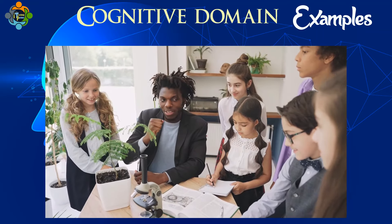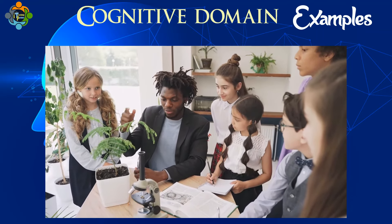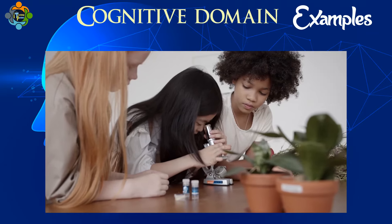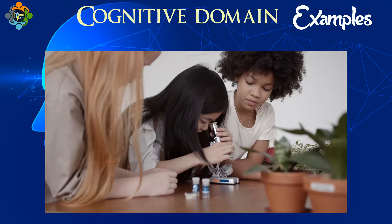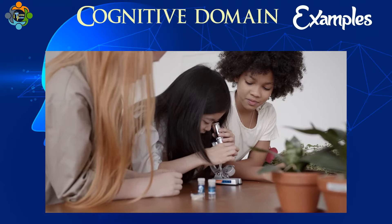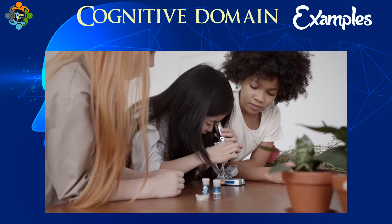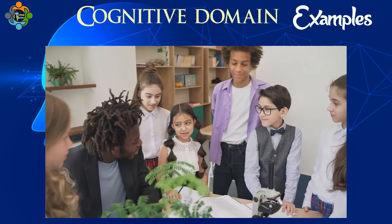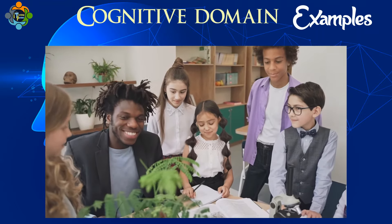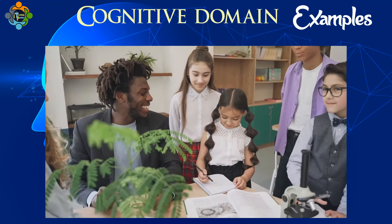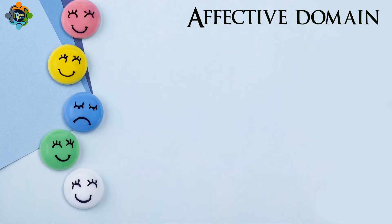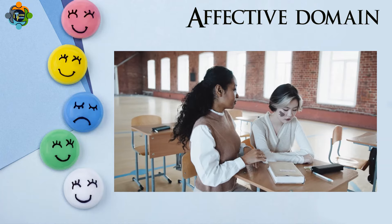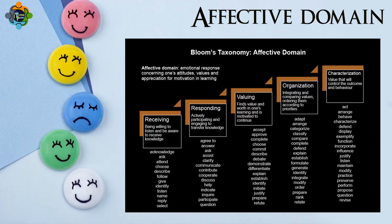Let's see how this works with an example. Imagine a science class: at the remembering level, students might recall the parts of a plant; by the creating level, they could be designing an experiment to test how different environments affect plant growth. Teachers can use this domain to structure learning objectives, assessments, and activities that promote higher-order thinking.